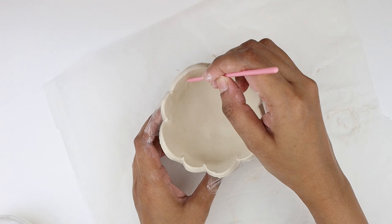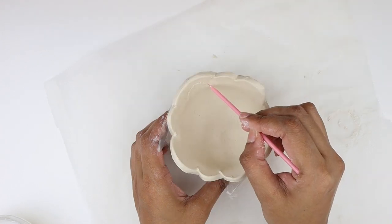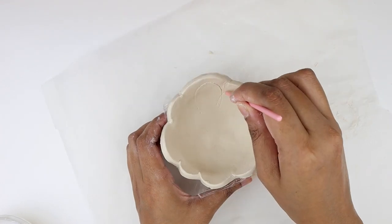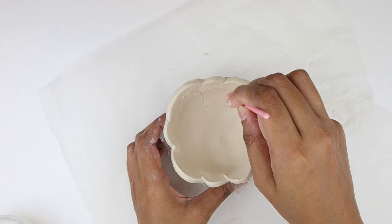Now taking the pointy clay modeling tool again, I'm engraving on the bowl to add some dimension to it. So basically I'm just following the shape and drawing these little curves.